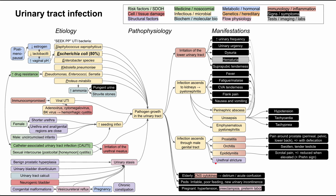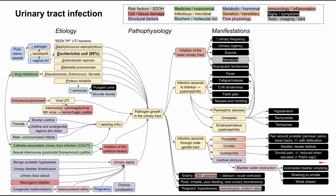Lastly, in a more chronic sense, ongoing UTIs in the male genital tract can predispose to urethral strictures. This causes a bladder outlet obstruction, with symptoms of incomplete bladder emptying, straining to urinate, and a weak urinary stream. That has been the mechanism of disease map for urinary tract infections. I hope this was helpful — thank you for listening.